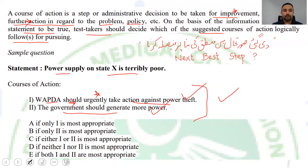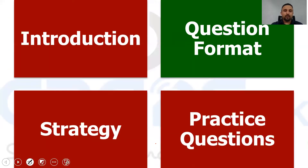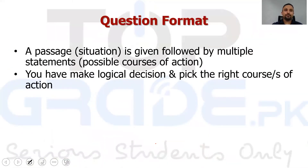So this means that both courses of action are right. The best response would be the one which includes both of these courses of action — if both one and two are most appropriate. So the best response for this question would be the option covering both courses of action. This was the basic introduction; now we go to the question format.